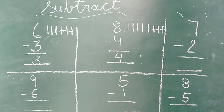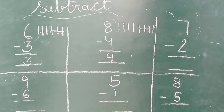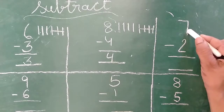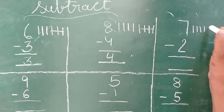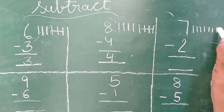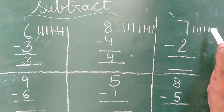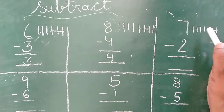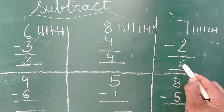Okay everyone. Sab ko samaj me aaya? Aap next sum me bata ye kya hoga. Kitna hai ye? Seven. Toh kya karenge? Seven lines. One, two, three, four, five, six, seven. Seven lines draw ki. Niche kitna number hai? Two. Toh two lines cross karenge. One, two. Kar di two lines cross. Aap baqi ko count kijiye. One, two, three, four, five. Our answer is five.